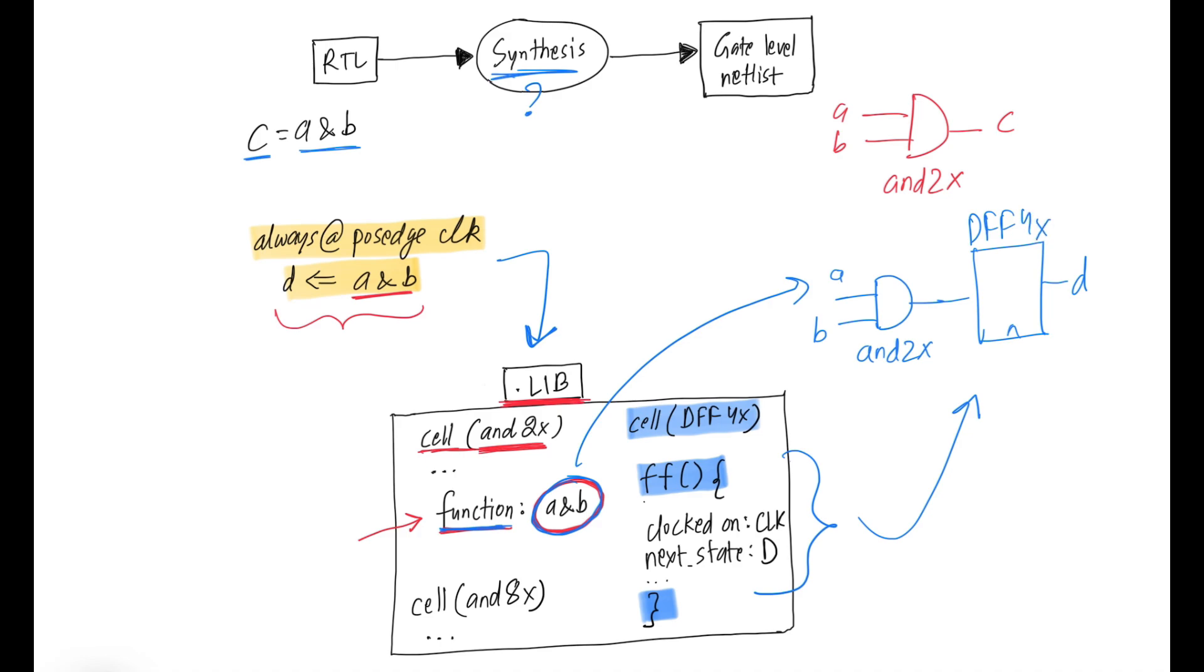Note that a synthesis tool has to consider many more things while picking a cell from the .lib. If there are some timing issues, it will try to use high drive strength cells or it will try to use LVT cells instead of HVT or SVT cells and other things like that. We will discuss synthesis flow and all of its sub-steps in a detailed video later.